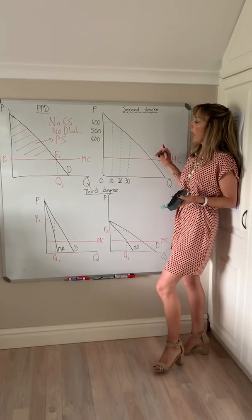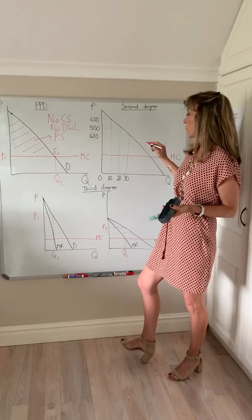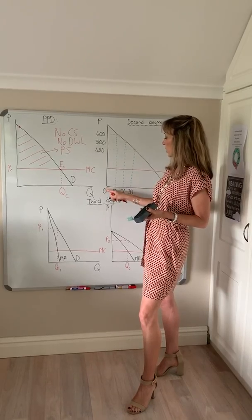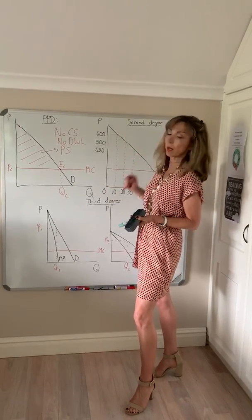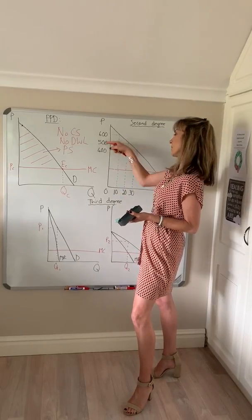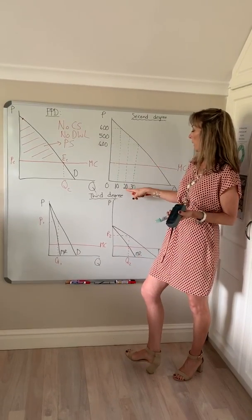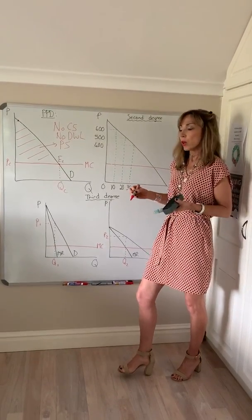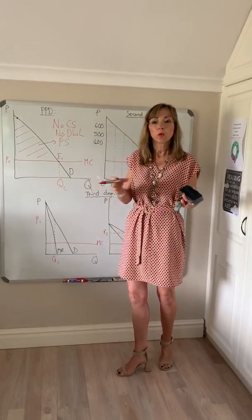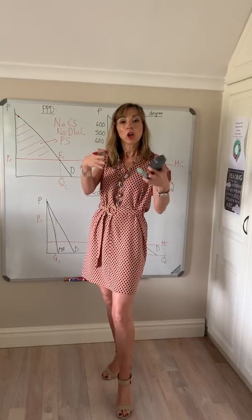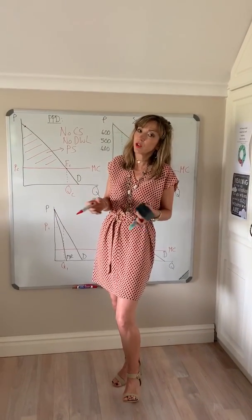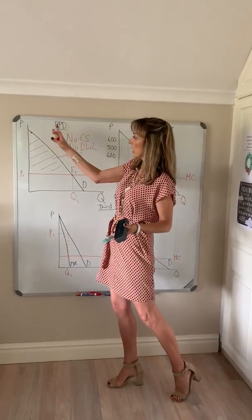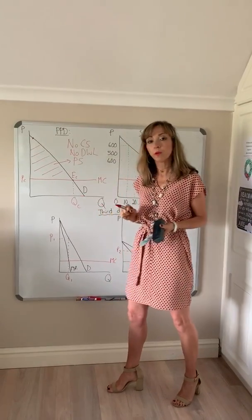Second degree, or non-linear price discrimination, is where you charge different prices according to how much you consume and which block you're in. If you consume between 0 and 10 units you pay 600 Rand, between 10 and 20 units you pay 500 Rand, and between 20 and 30 units you pay 400 Rand. This distinguishes between groups of consumers but doesn't identify each individual as with perfect price discrimination.